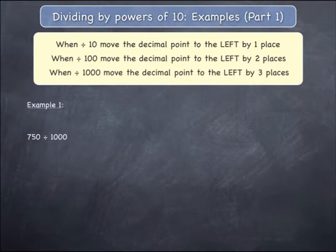Example 1: 750 divided by 1000. Write your starting number, 750, and if that starting number does not have a visible decimal point, you can add it at the end of the number.